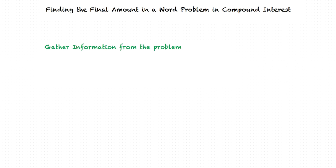Okay, I think I understand the concept. In order to determine the final amount in a compound interest problem, we first gather information from the problem required to solve the problem. Finally, we substitute in the formula and determine the amount. Perfect.